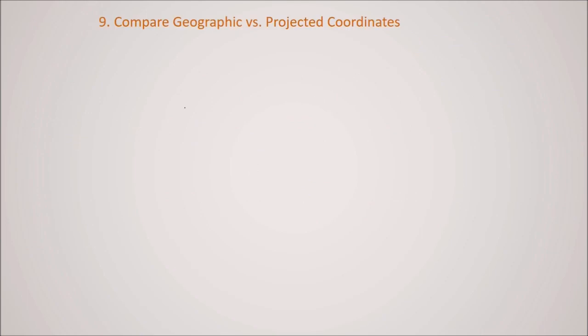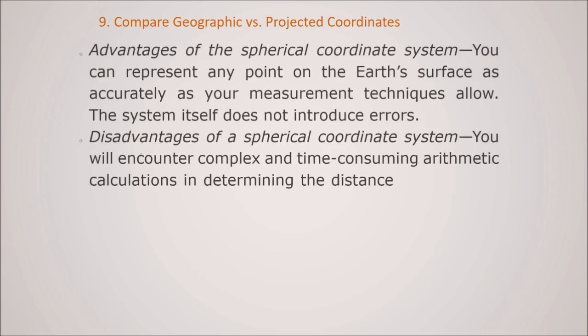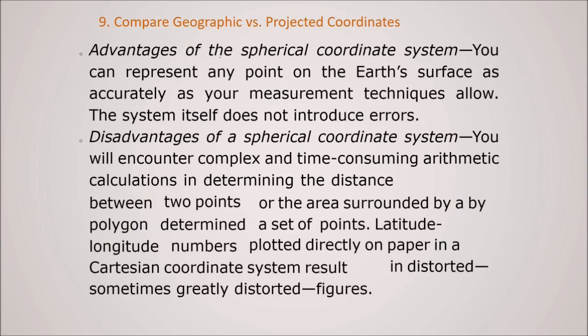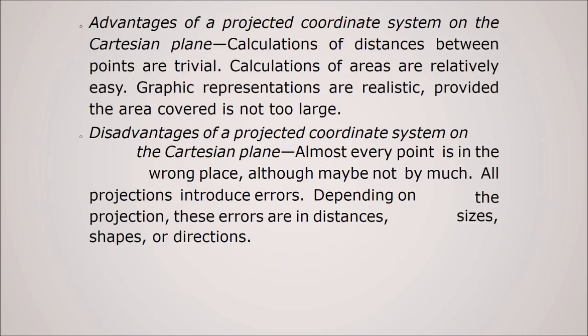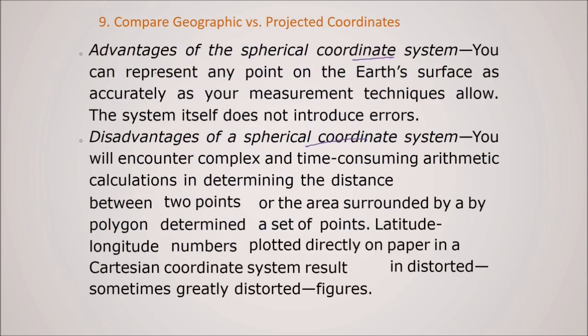Compare geographic and projected coordinates. That means in terms of advantages and disadvantages. First is the advantages of a spherical coordinate system. And we will see the disadvantage of this spherical coordinate system. And we will see the advantage of projected coordinate system. And then we will see the disadvantage of projected coordinate system. You can represent any point on the Earth's surface as accurately as your measurement technique allows. So this system itself does not introduce errors.